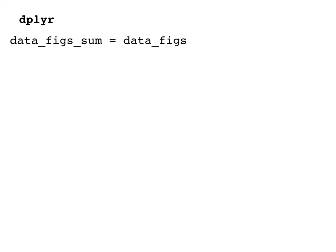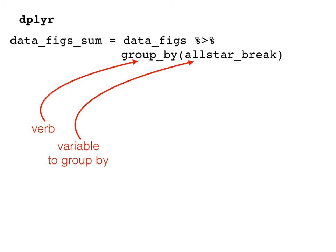This is our last new dplyr call for today. As always, we make our new dataframe and add our pipe. Our first new verb is group_by. Group_by tells R how to separate the data, so that any summaries are done within each level of a variable. In our case, the variable we are grouping by is allstar_break, because we want to know how often the Giants won both before and after the all-star break.